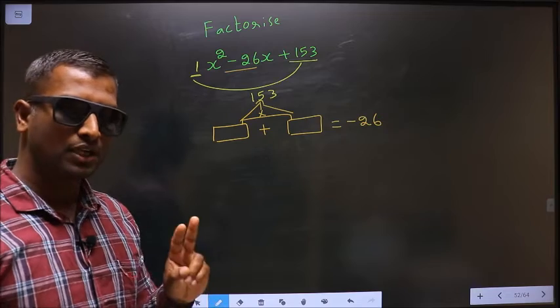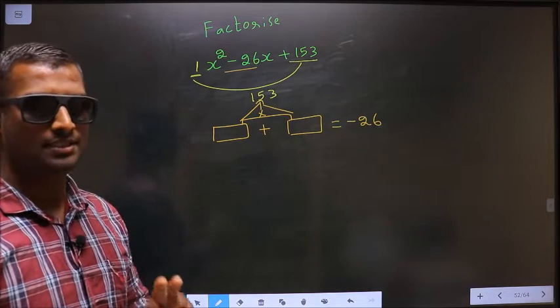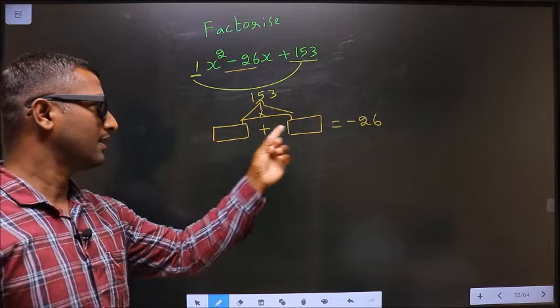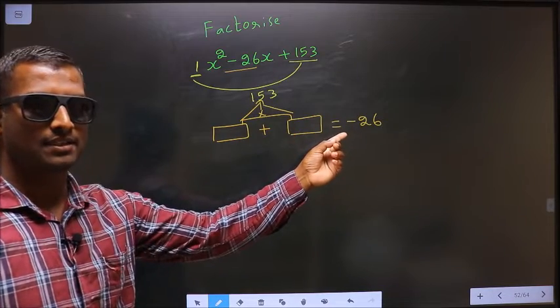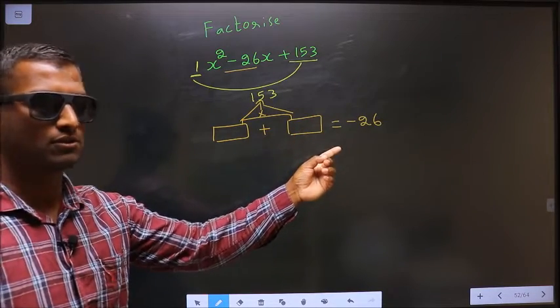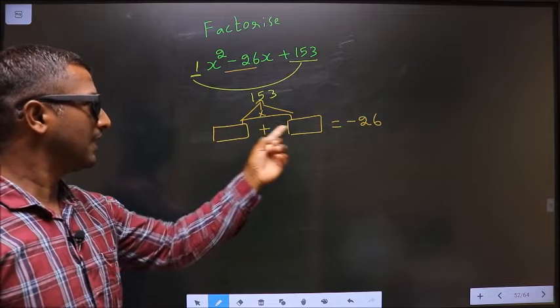I repeat, look out for two numbers such that when you add, you should get minus 26, and also when you multiply, you should get 153.